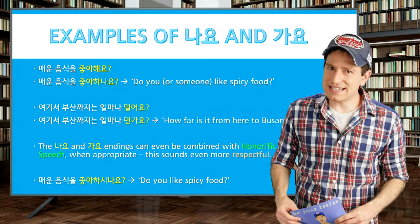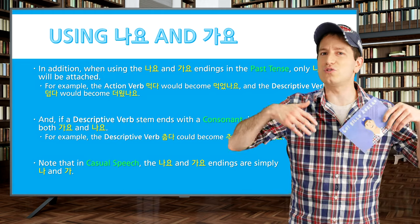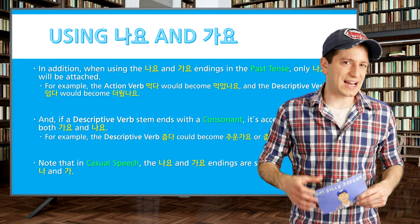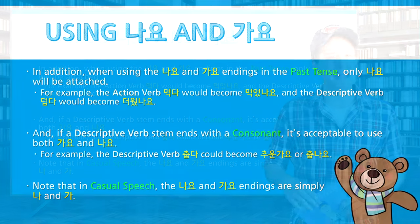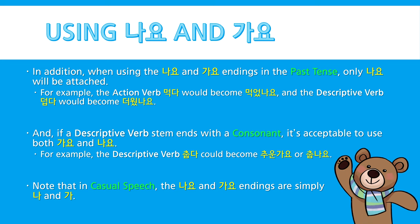There are some exceptions when using these forms. First, when using them in the past tense, you'll simply attach 나요 to the verb stem regardless of the verb type. For example, the action verb 먹다 becomes 먹었나요? and the descriptive verb 덥다 becomes 더웠나요? Also, if a descriptive verb stem ends with a consonant, it's common and acceptable to use either 가요 or 나요 — for example, 춥다 could become 추운가요 or 춥나요. In casual speech, these endings simply become 나 and 가.